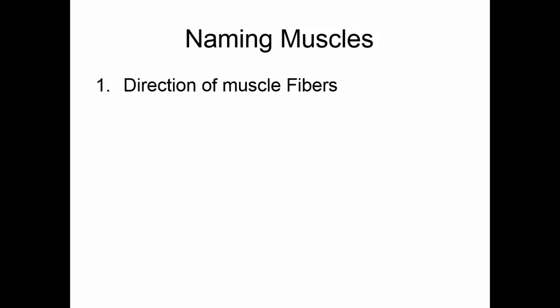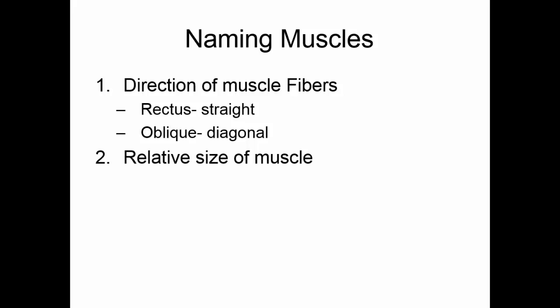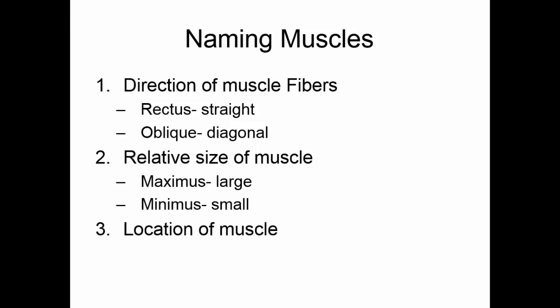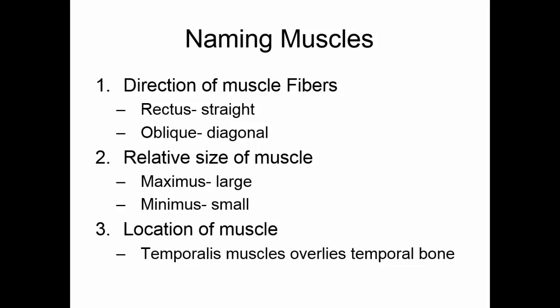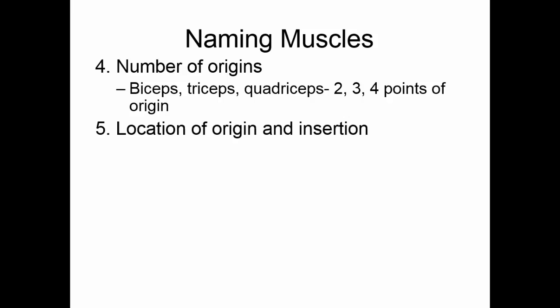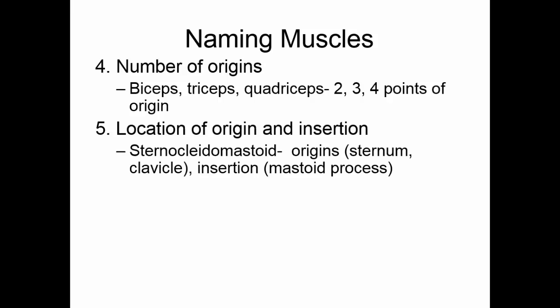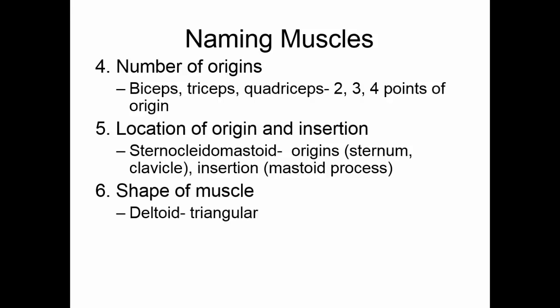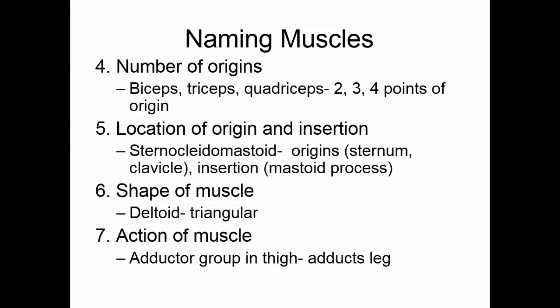Sometimes muscle names can help you identify what they are or where they are. The direction of the muscle fibers may be indicated — rectus means the fibers run straight, and oblique means the fibers run diagonally. A muscle may be named based on relative size: maximus would be large, and minimus would be small. The muscle may be named for its location — for example, the temporalis muscle lies over the temporal bone of the skull. The number of origins may be included: biceps means two heads, triceps three, quadriceps four. The location of origin and insertion may be included — the sternocleidomastoid originates on the sternum and clavicle and inserts on the mastoid process of the skull. The shape may be used — deltoid is triangular. And we may even use the action, such as the adductor group in the thigh, which adducts the leg.